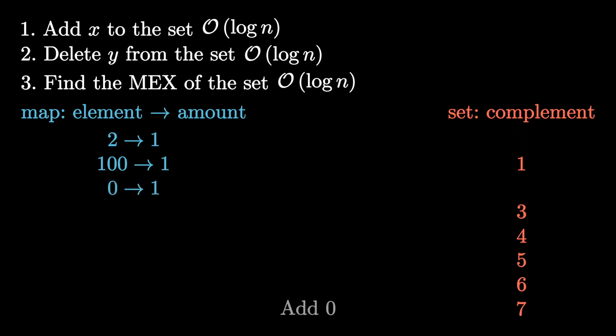And if at some point an element is removed from our multiset, then we need to subtract 1 from its value in the map. And also, if after that its value becomes 0, it means that this element has completely disappeared from our multiset, so it must be added back to the complement set. And if we need to find the mex of our multiset, we can just simply take the smallest element in the complement set. And it's gonna be the answer. This algorithm's time complexity is O(n log n) if the number of queries is n.